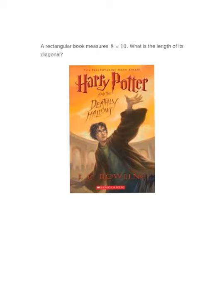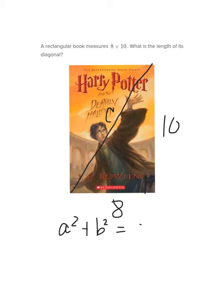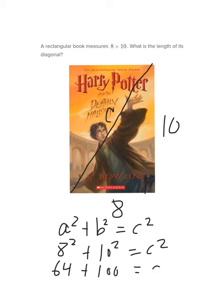Anyway, the question is, how long is this diagonal? Alright, well, let's do some drawing. It says I have an 8 by 10 book. So this much is 8. This much is 10. And here is the diagonal. This is a right triangle. The length of the diagonal can be solved by using the Pythagorean theorem. So we have a squared plus b squared equals c squared. 8 squared plus 10 squared equals c squared. 64 plus 100 equals c squared.